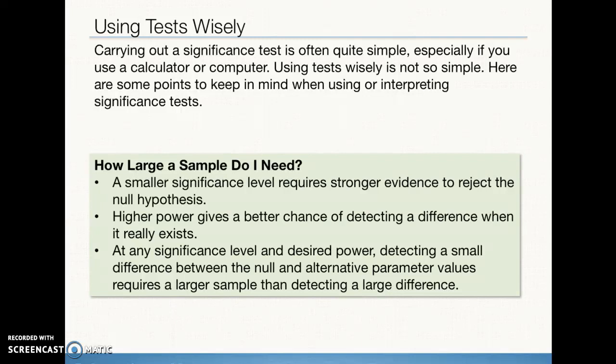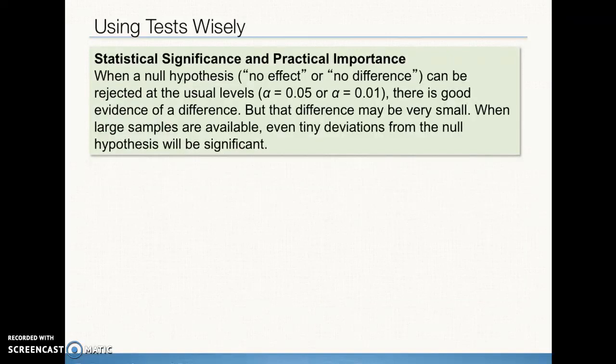And at any significance level and any desired power, detecting a small difference between the null hypothesis and the alternative parameter values requires a larger sample than detecting a large difference. So what that means is, almost no matter what your problem is, having a higher sample value, a sample size, is going to solve the problem. With larger sample sizes, our significance test is going to be able to give us more information, because the larger sample sizes are going to be able to detect small deviations from the null hypothesis more easily.